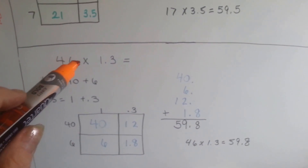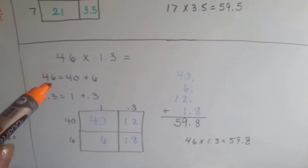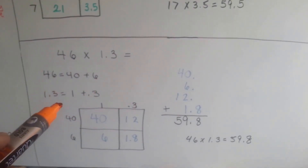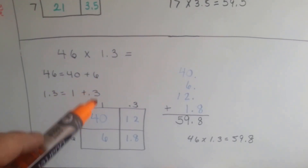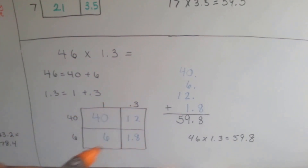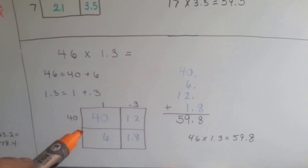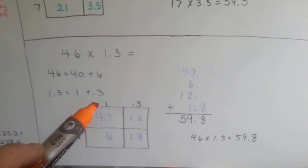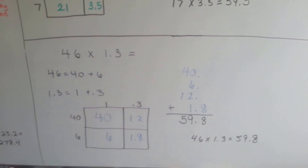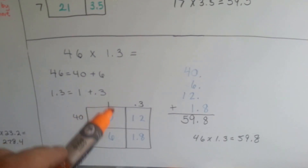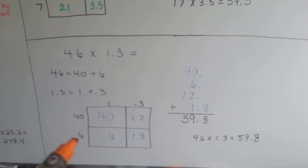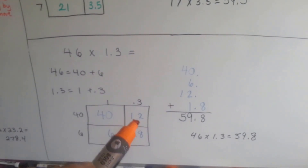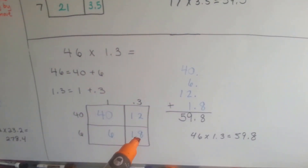46 times 1 and 3 tenths. We would open the 46 up to 40 plus 6. The 1 and 3 tenths would open up to 1 plus 3 tenths. We draw our box and make our squares with the plus sign. We put our 40 plus 6 down here, and our 1 plus 3 tenths over here. We multiply: 40 times 1 is 40, 6 times 1 is 6, 40 times 3 tenths is 12, and 6 times 3 tenths is 1.8.